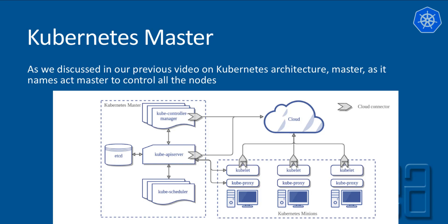Using minikube you can spin up one master and one node, which is basically for development purposes. You cannot have multiple different VMs running with multiple different containers because it's going to consume so much memory and resources — a laptop can't really survive with that much infrastructure. That's why we use cloud resources for working with scaled nodes.